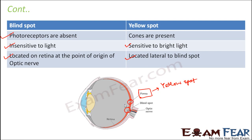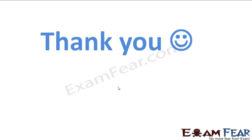With this we have reached the end of this lesson. I hope this lesson on neural control and coordination was helpful. Our discussion on control and coordination is not yet complete — we will continue with the endocrine system in the next lesson. See you all in the next lesson. Thank you.